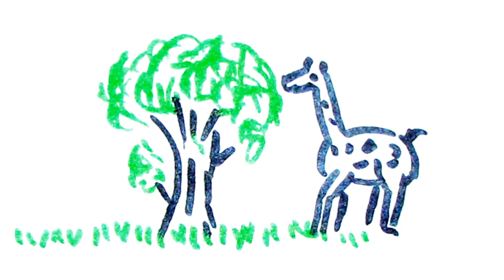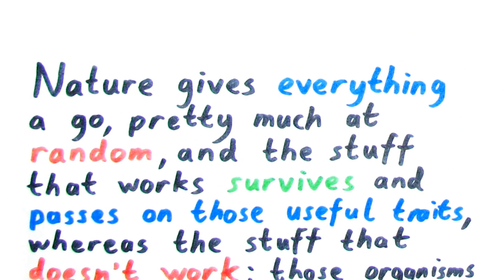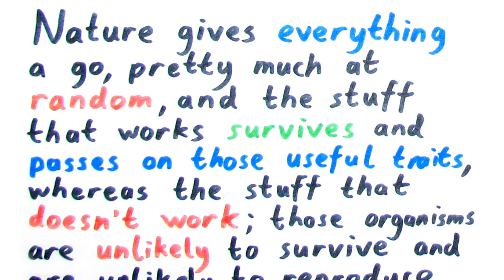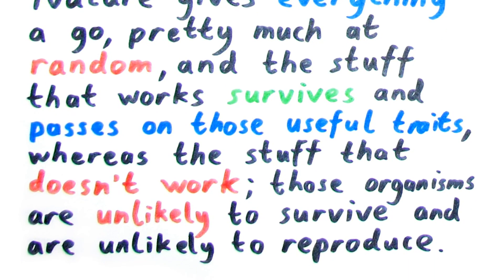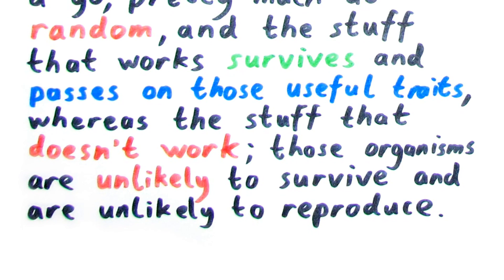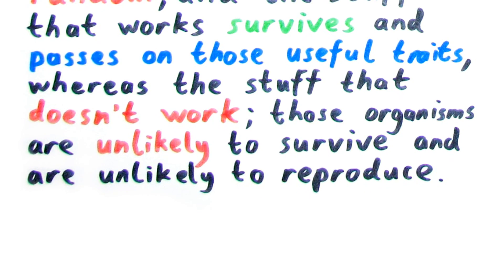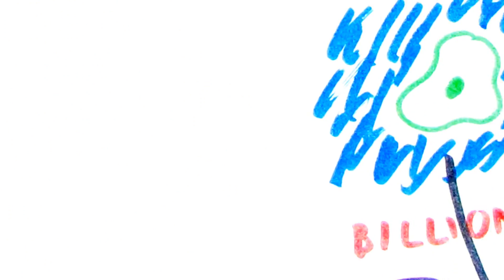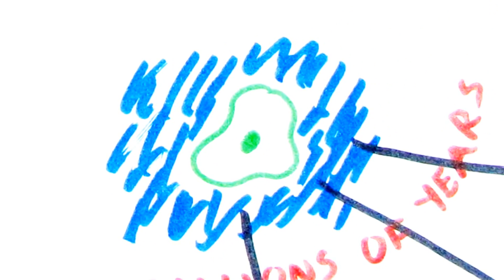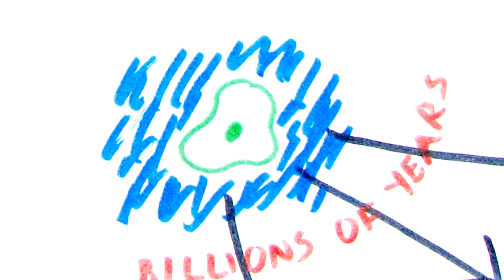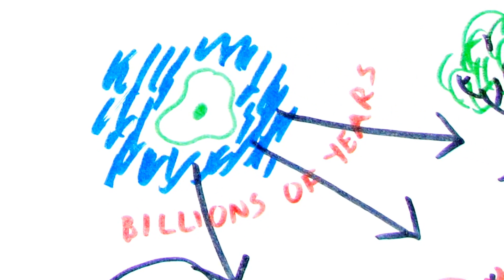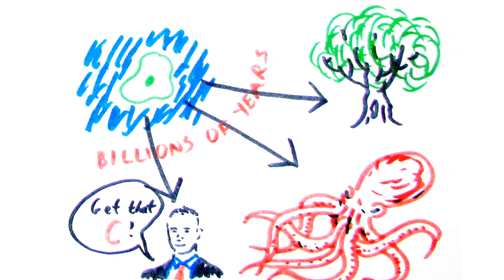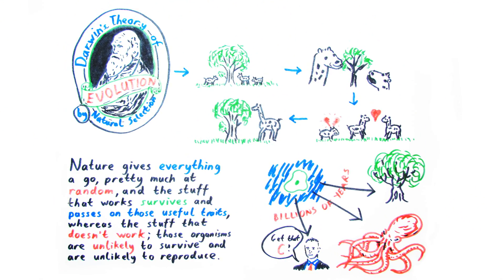Essentially, you can sum it up as: nature gives everything a go, pretty much at random. And the stuff that works survives and passes on those useful traits, whereas the stuff which doesn't work — those organisms are unlikely to survive and are unlikely to reproduce. This one very simple, very elegant theory can then explain how we set off from very simple organisms billions of years ago and ended up with the complex and varied life which we get on Earth today.